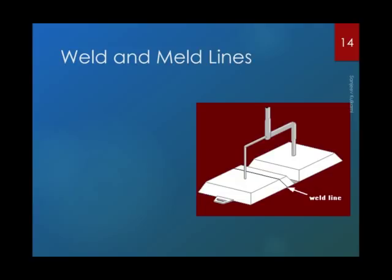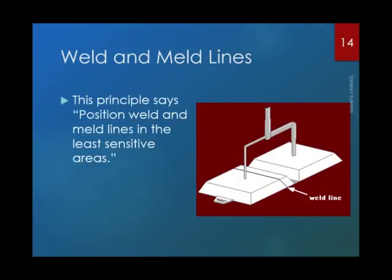Weld and melt lines: in some cases, weld lines or melt lines cannot be avoided. This principle says to position weld and melt lines in the least sensitive areas. What you see on the screen is a typical box or lunch box — or a spectacle holder case — with a live hinge. The tool designer has balanced the flow in such a way that the weld line falls away from the hinge area.